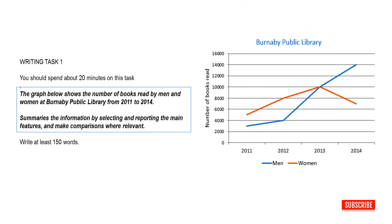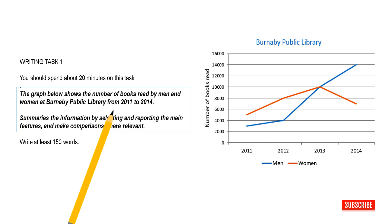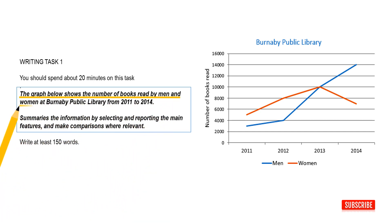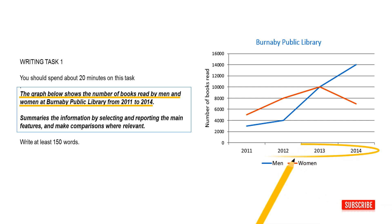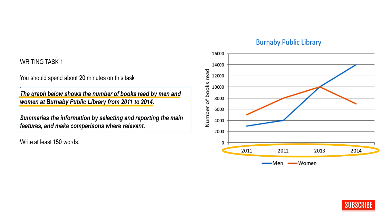This is a sample of writing task 1 question. What the given question card says: 'The graph below shows the number of books read by men and women at Burnaby Public Library from 2011 to 2014.' If you have a line graph with different times on its horizontal axis, use trend language in your writing. The data on the graph is not static — it changes over the time period.